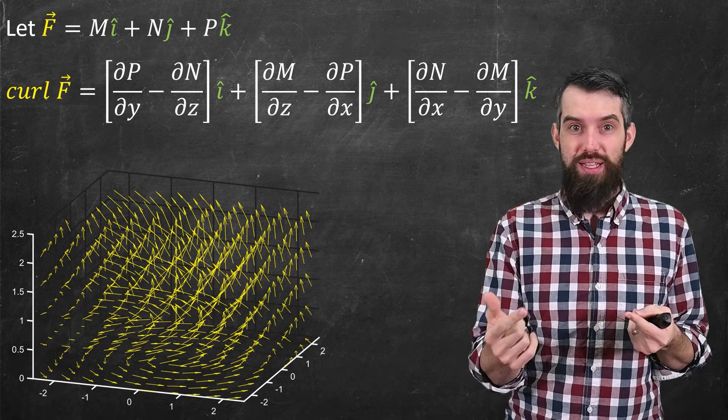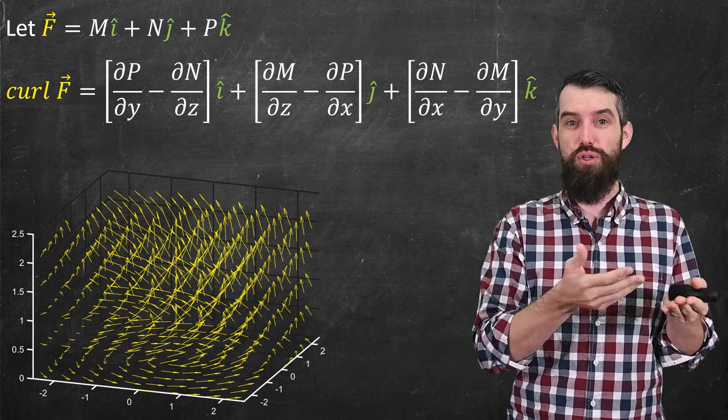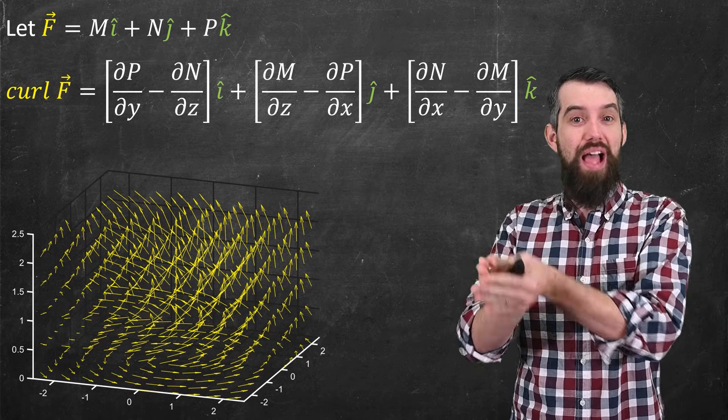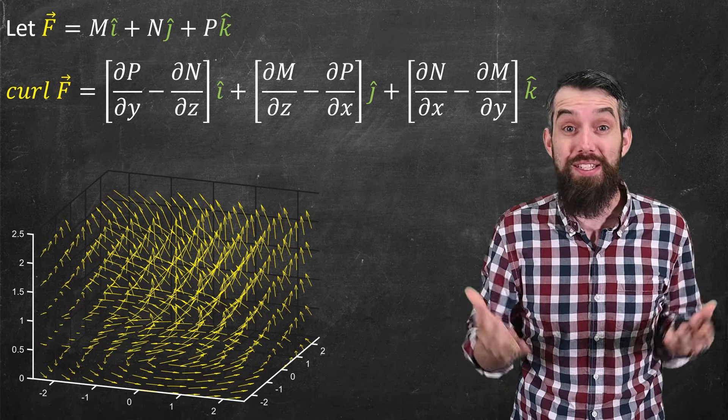It's a vector. It's got an i hat, j hat, and k hat component. Each of those vectors is a difference of two different partial derivatives. And basically, if you give me some vector field f, I can give you another vector field, the curl of f. But what does that mean?